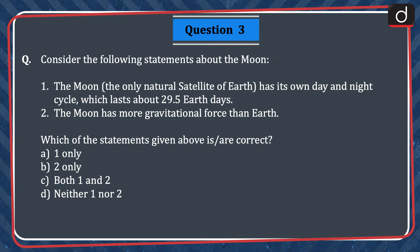Next question: consider the following statements about the Moon. (1) The Moon, the only natural satellite of Earth, has its own day and night cycle which lasts about 29.5 Earth days. (2) The Moon has more gravitational force than Earth. Which statements are correct? Options: (A) one only, (B) two only, (C) both one and two, or (D) neither one nor two. The correct answer is option A — one only.